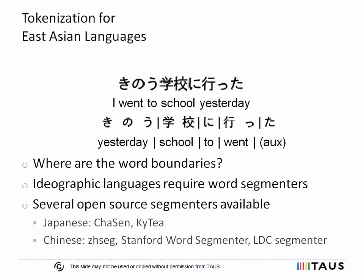An even more complex case for tokenization are East Asian languages like Japanese and Chinese. In these ideographic languages, words in a sentence are not separated by spaces. We need to segment words for these languages using a word segmentation tool. Shown on the slide is a Japanese example sentence and its segmentation. Segmenters are often statistical tools which make mistakes, and a wrong segmentation can completely change the sense of a sentence. In the example sentence, the first character means "tree" and the second and third characters mean "brain." High quality word segmentation is therefore necessary to achieve acceptable quality for MT involving East Asian languages, which are hard to machine translate to begin with.